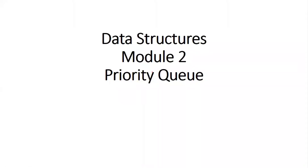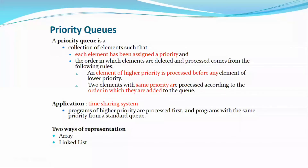Hello everyone. In this video, we are going to see about the next queue type, that is Priority Queue. So what is Priority Queue? Priority Queue is a collection of elements such that each element has assigned a priority. So normally, in our queue, we call the value of the element and the priority as one element, so we call it Priority Queue. But the remaining process related to the elements like deletion and other processing is based on some rules in the case of Priority Queue.